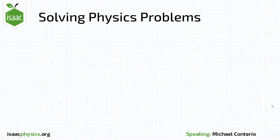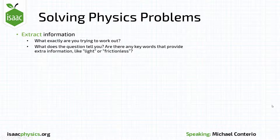To solve physics problems on Isaac Physics and elsewhere, it can be useful to use the following steps in order. Firstly, think about what you're trying to find out through the course of the problem and what information you can extract from the question. As well as variables inside the question, there may also be key phrases like 'light' or 'frictionless' which will tell you more about the situation.